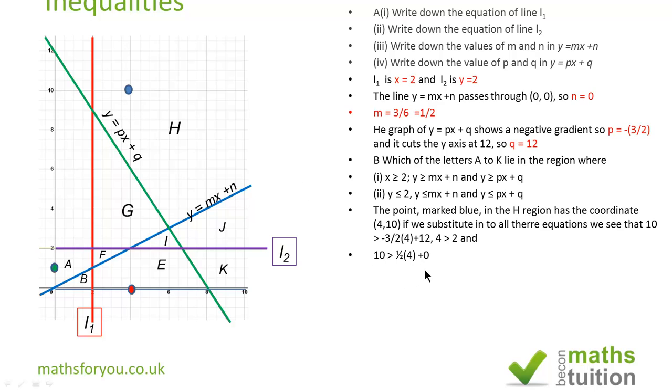It is to the right of the x equals 2 line, so 4 is bigger than 2 and therefore it is valid. So our answer for subsection 1 of part B is H.